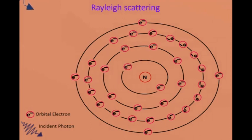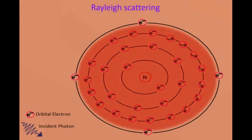Examples of coherent scattering are Rayleigh scattering and Thomson scattering. While Compton effect is an example of incoherent scattering.